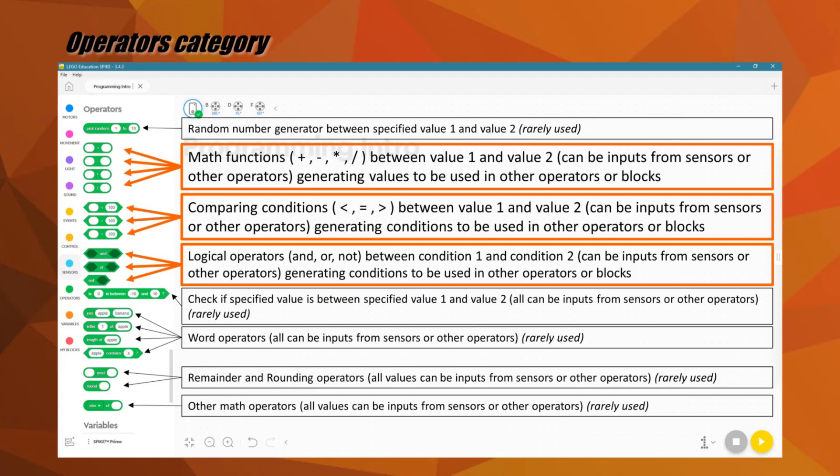The green blocks are from the operators category. Unlike the blocks from the other categories we have seen so far, the operator blocks are not used by themselves, but within other blocks. Their oval or hexagonal shape implies which blocks they can be combined with.